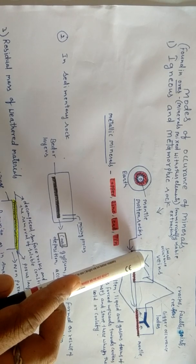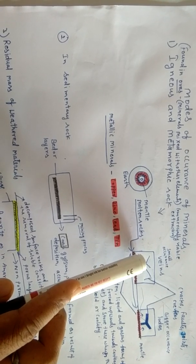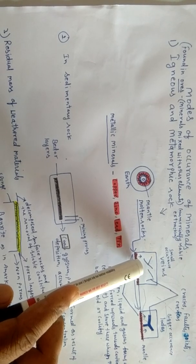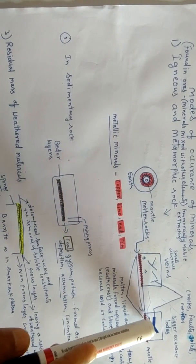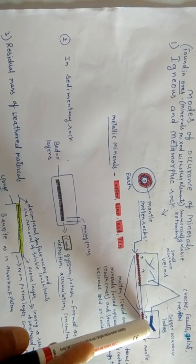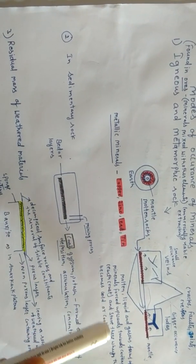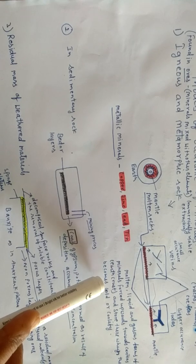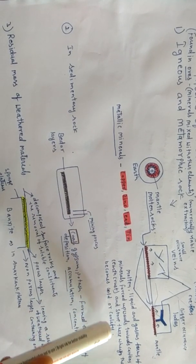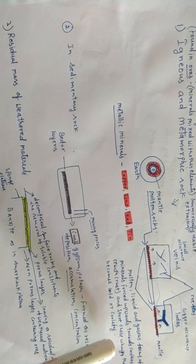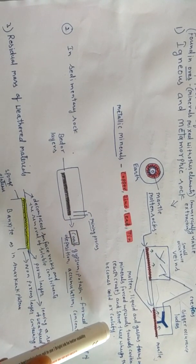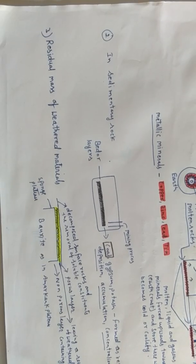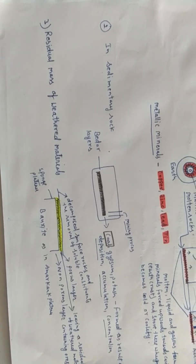Small categories of minerals fill small joints forming veins, while larger areas form lodes. Molten liquid and gaseous minerals are forced upward into cavities in the Earth's crust and stored there. When they cool and solidify, we can mine and extract those minerals.